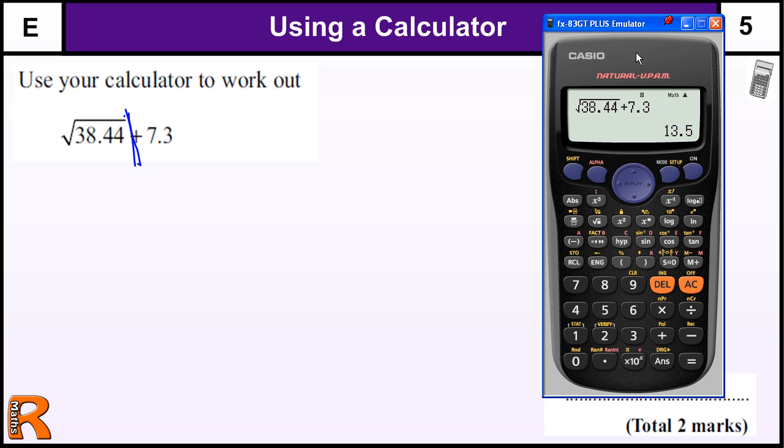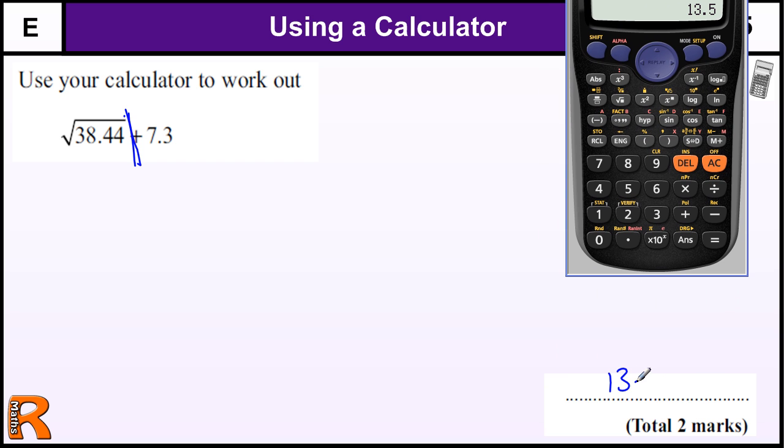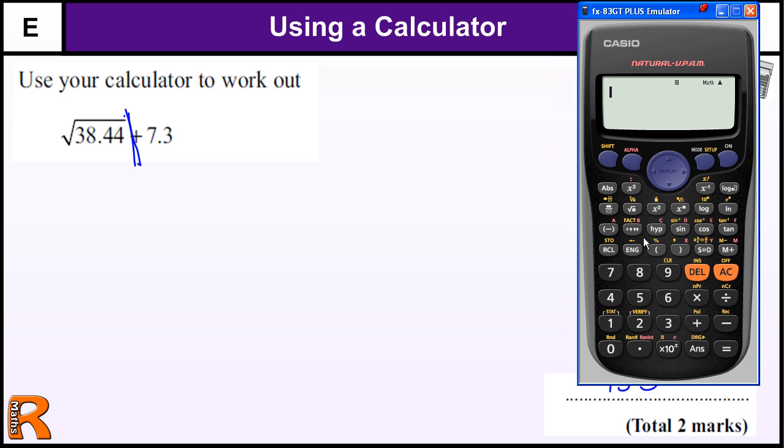If we press equals we get 13.5, and that's the answer. Now if you've got a slightly older calculator, you can't necessarily type it in as it looks on the screen, and sometimes you can't even type it in the same order. You would type 38.44 and then press your square root button.